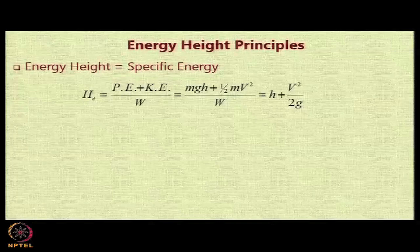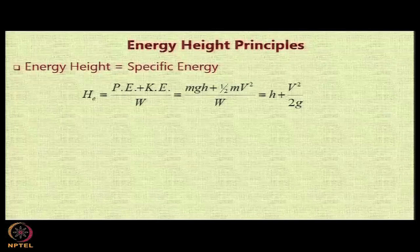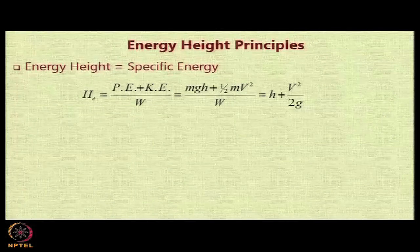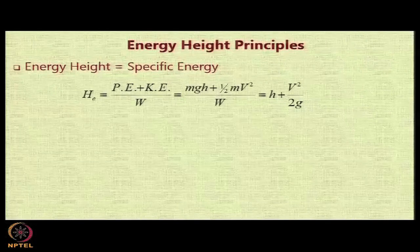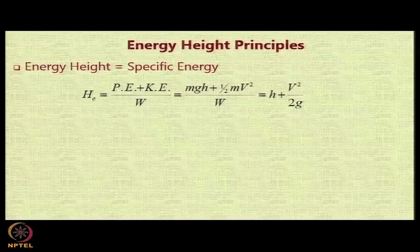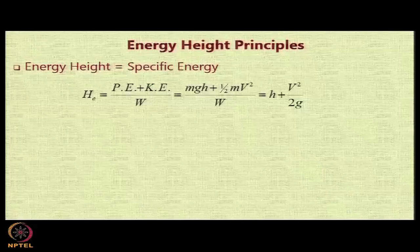V is in meters per second and g is in meters per second squared. If you look at the units of this specific energy, they will come in meters. That is why we call it as energy height. The energy height is equal to h plus v squared by 2g.